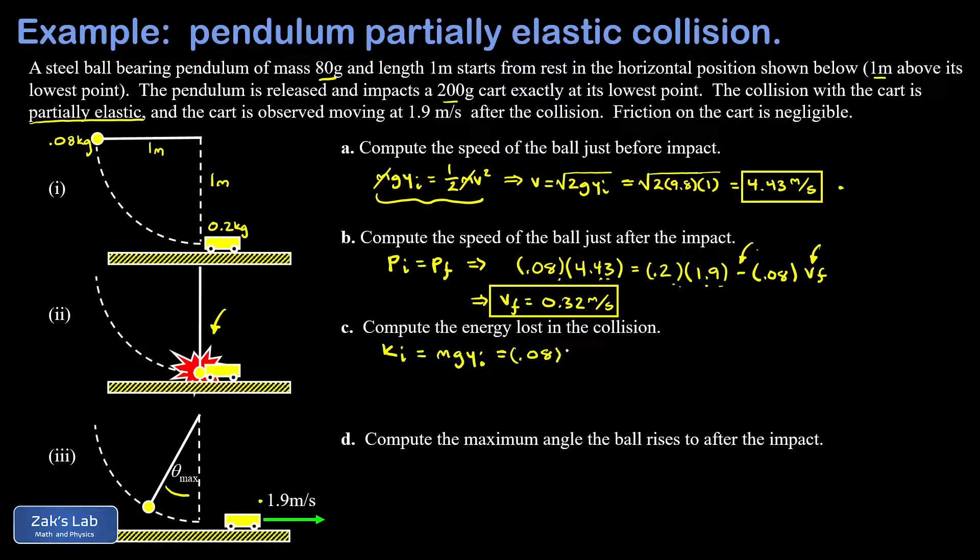So it's actually simpler to just go ahead and plug in MgY initial for the initial energy in that pendulum bob. I have a mass of 0.08 kilograms, g is 9.8, Y initial is one meter. This gives me 0.784 joules of initial energy.